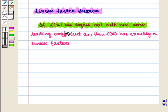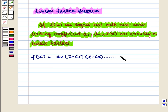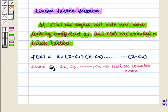which states that if f(x) has degree n greater than or equal to 1 with non-zero leading coefficient a_n, then f(x) has exactly n linear factors and can be written as f(x) = a_n · (x − c1)(x − c2)···(x − cn), where c1, c2, c3, ..., cn are real or complex zeros.